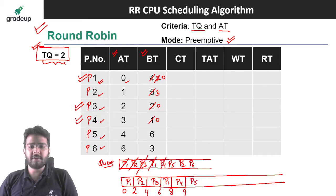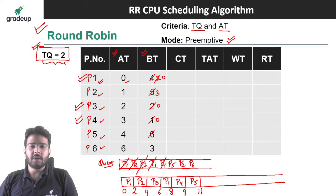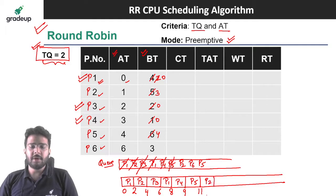Now we schedule P5. The time quantum is 2 and burst time is also 2, so we schedule for 2 units from 9 to 11. We dequeue P5 and re-enqueue it. Next is P2 with remaining burst time 3 and time quantum 2, so we schedule for 2 units from 11 to 13, making remaining burst time 1. We dequeue P2 and re-enqueue it.